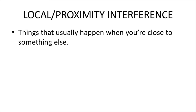We're going to have two types of interference. The first one is local proximity, and the second one will be distance. Local proximity interference is things that usually happen when you're close to something else — things you're affecting nearby, or things nearby that are affecting you.